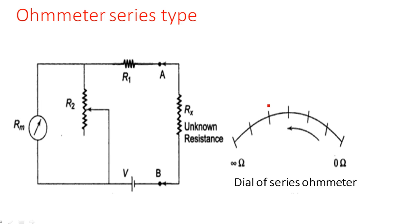Let us see the circuit diagram and the dial of the series ohmmeter. We have not discussed the dial of any voltmeter or ammeter before, but in the ohmmeter case we should definitely look at the dial. There is some speciality — if you see the dial of this meter, the left side has infinity and the right side has zero.